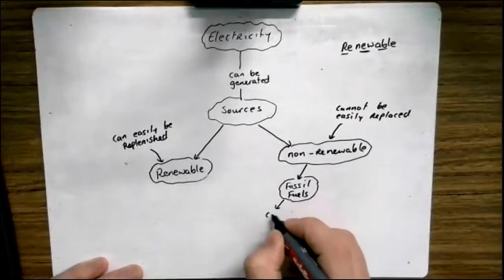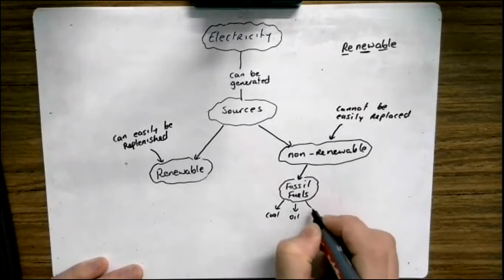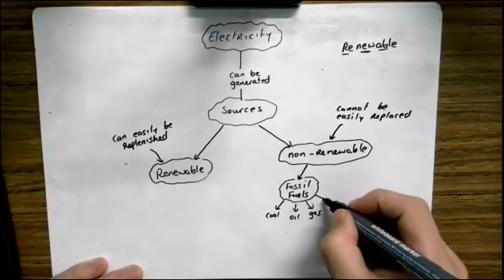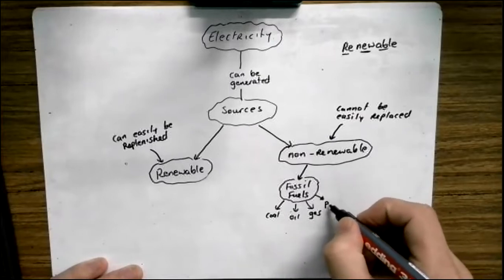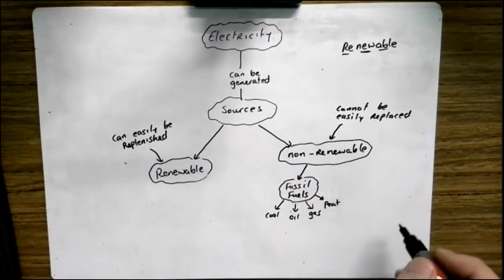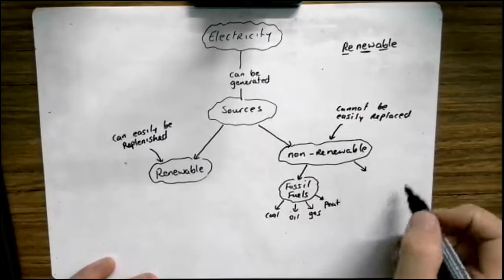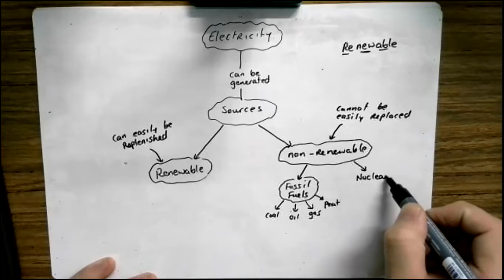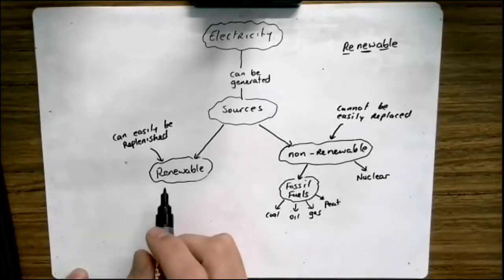Examples of fossil fuels are coal, oil, gas and in Ireland we have a fourth one that we use quite regularly or that we used to use. It's starting to run out now. It's peat, also called turf. Another non-renewable energy resource is nuclear fuel. Nuclear fuel is a non-renewable source of creating electricity.